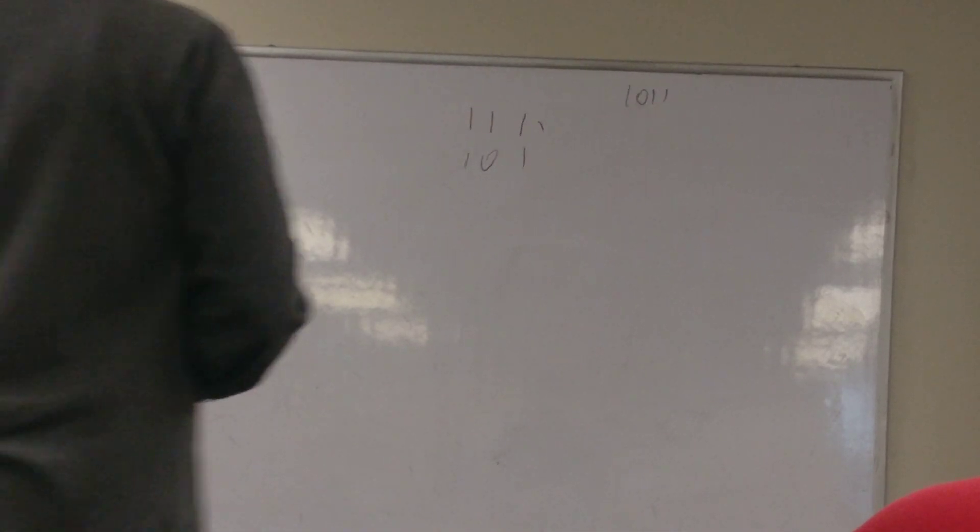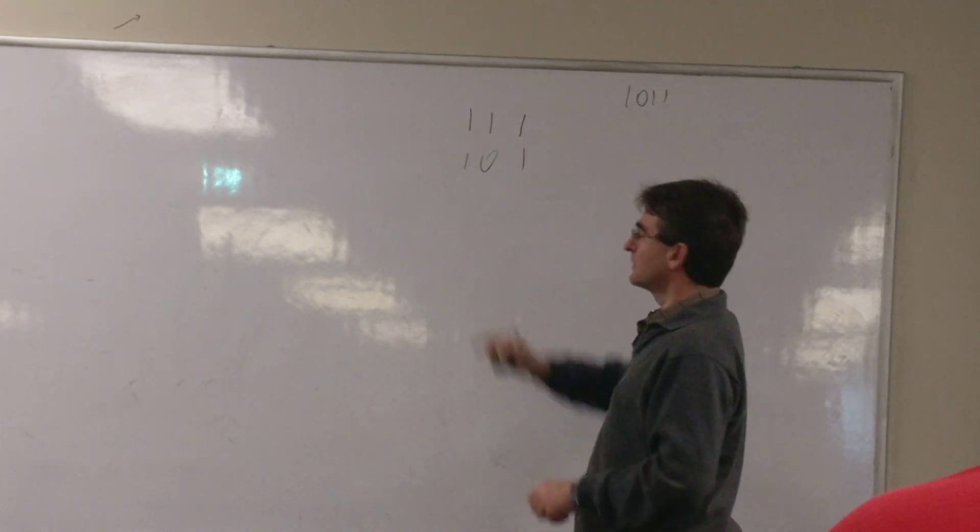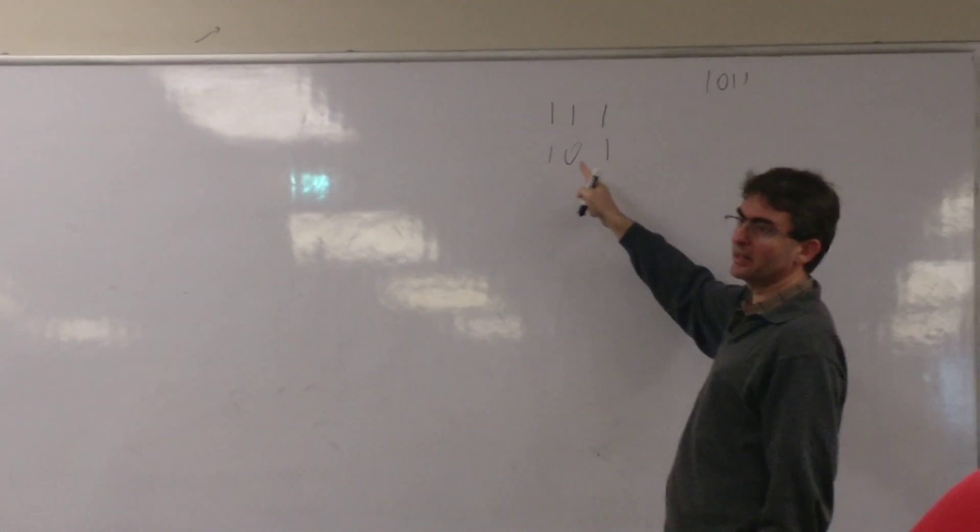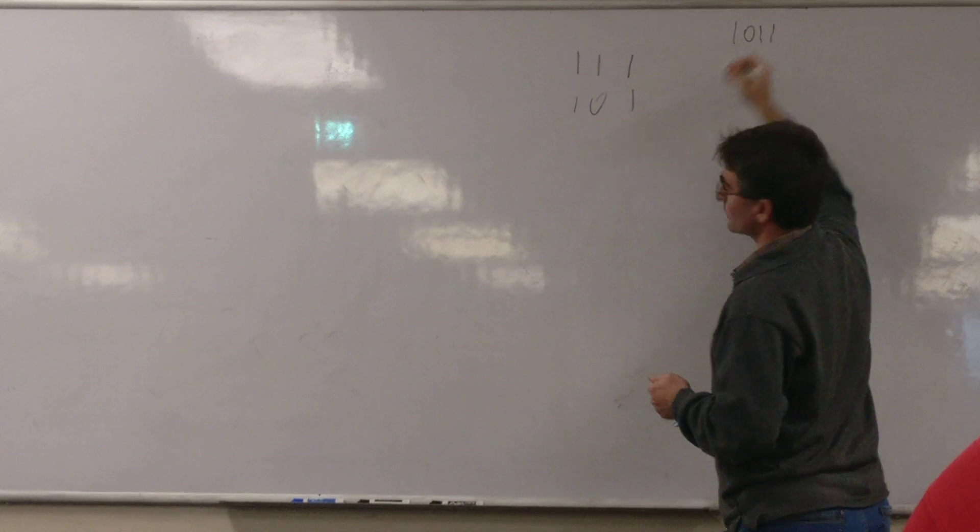So we are going to see how you multiply. This is x squared plus x plus 1 and this is x squared plus 1 modulo x cubed plus x plus 1.